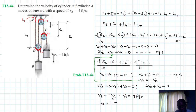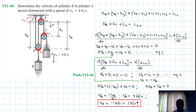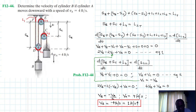V_B equals -1 foot per second, which means 1 foot per second going upward. This is the final solution for our problem — cylinder B has a velocity of 1 foot per second going up.